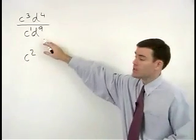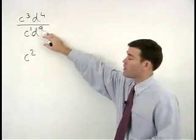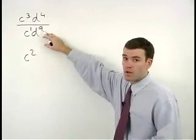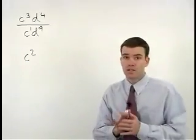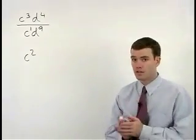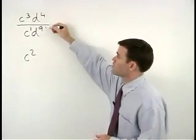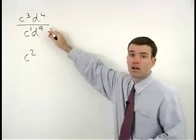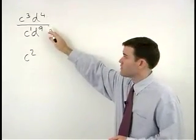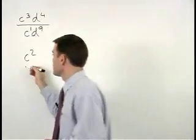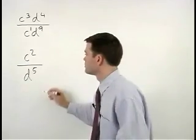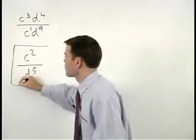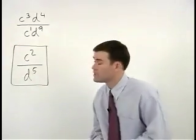For our Ds, notice that the exponent on the D is greater in the denominator than it is in the numerator. In this situation, we still take the difference between the exponents and the difference between 9 and 4 is 5. But the D to the fifth will go in the denominator of the answer. So we have C squared over D to the fifth.